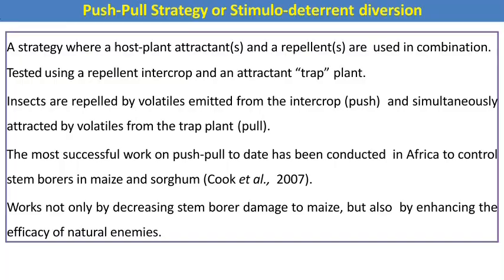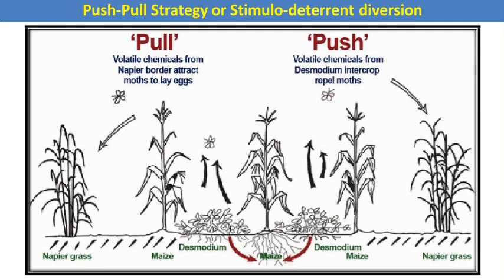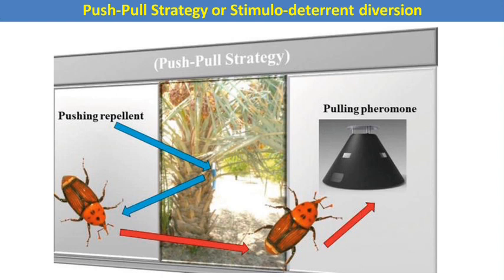The push-pull strategy uses host plant attractants and repellents in combination. A repellent intercrop and attractant trap plants are used together. Insects are repelled by volatiles emitted from the intercrop and simultaneously attracted by volatiles from the trap plants. The most successful push-pull work has been conducted in Africa to control stem borers in maize and sorghum — it decreases stem borer damage to maize and also enhances the efficacy of natural enemies. Another example is the red palm weevil in coconut attracted using pulling pheromones.